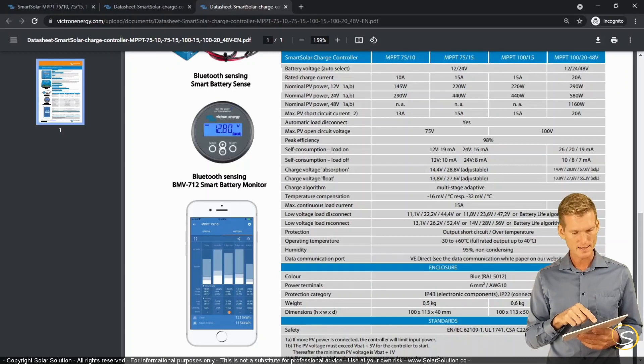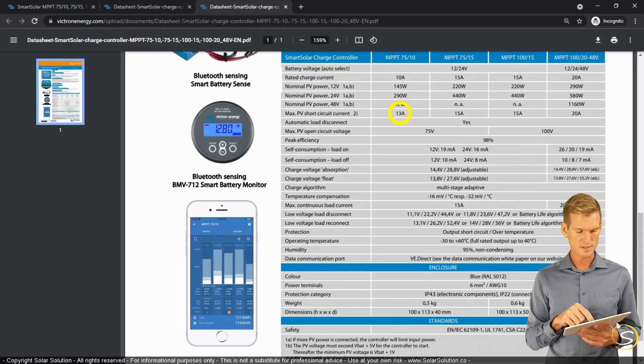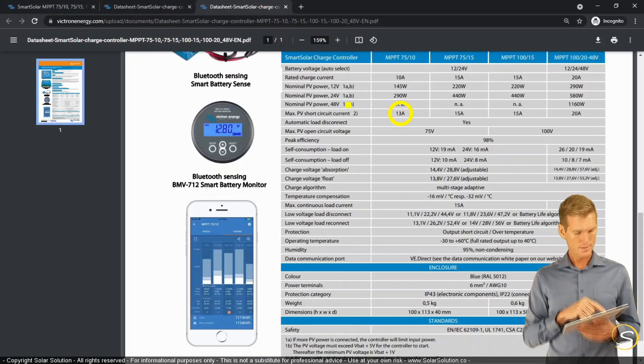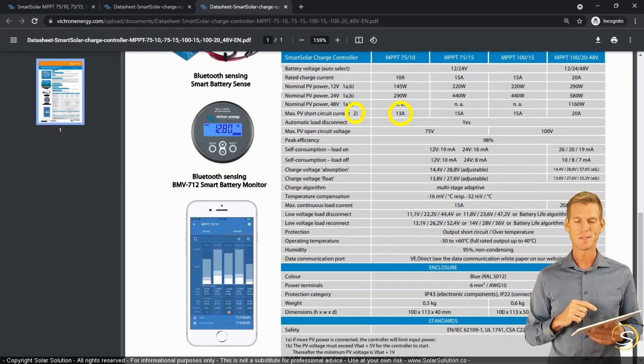So I just want to explain that. And then the other value, which is also really important, is the maximum PV short circuit current, 13 amps. And it places a note there as well, because if a PV array with a high short circuit current is connected to the system, it may damage the controller. So it will very likely break. So don't do that. That's a very bad plan.